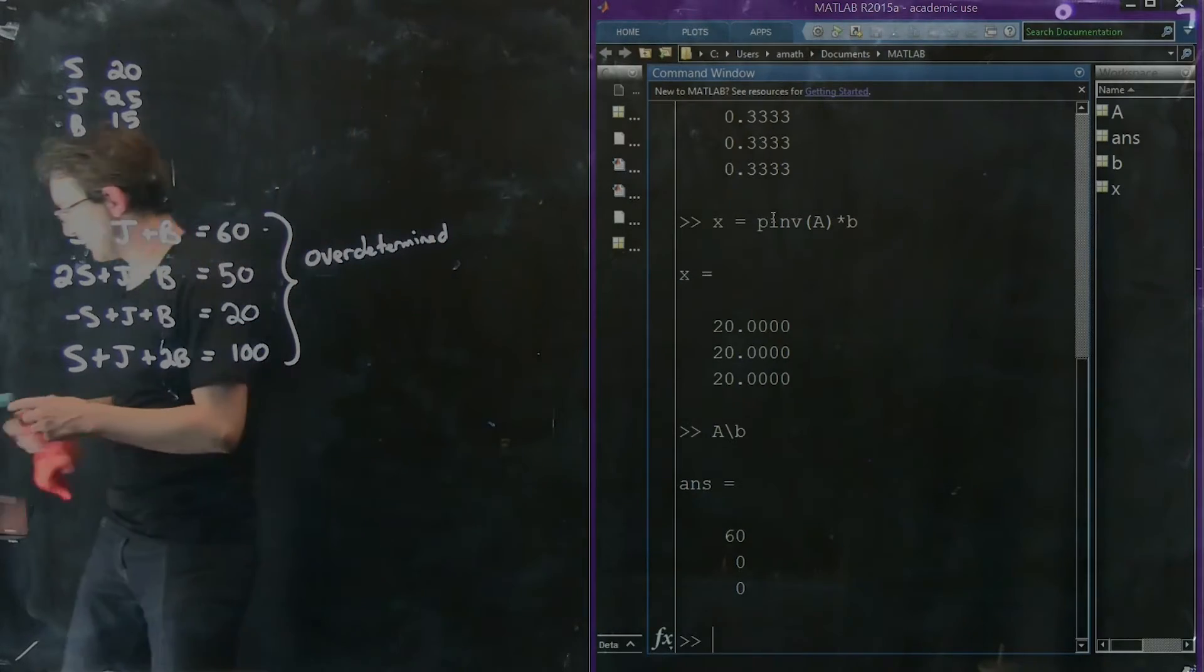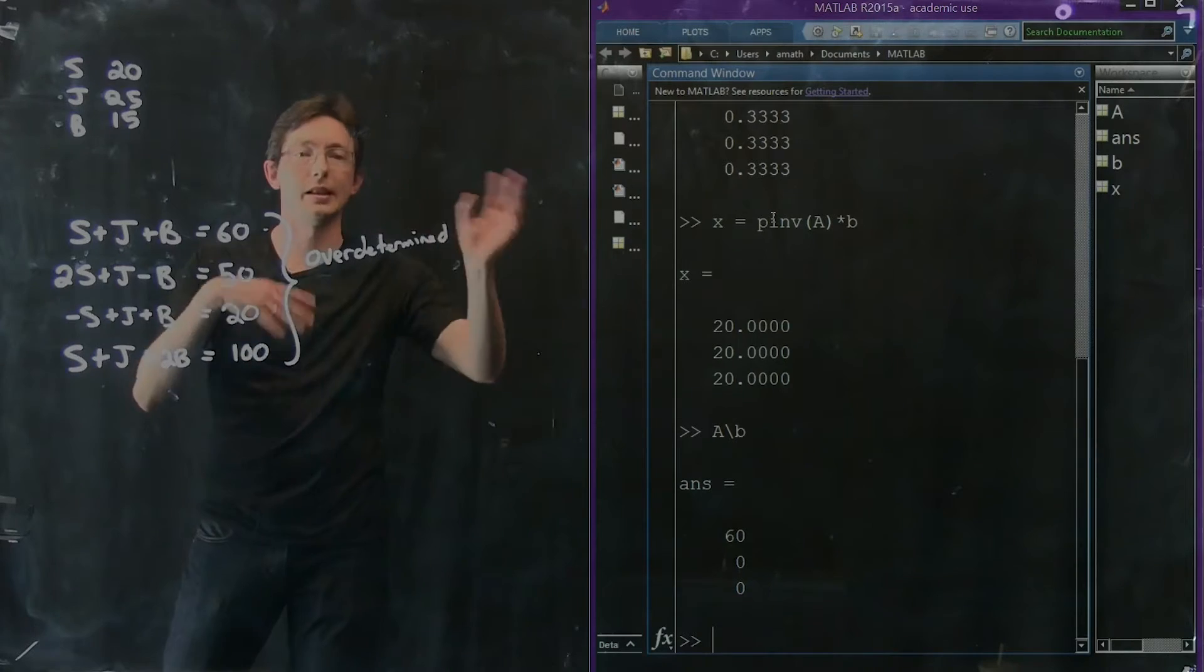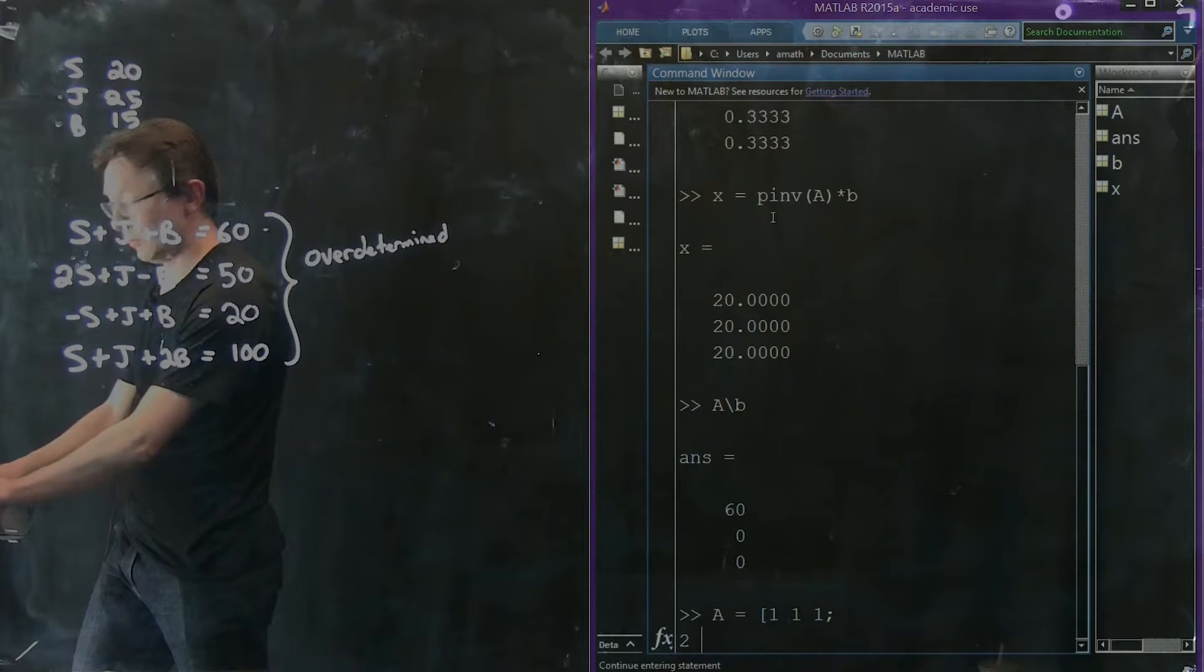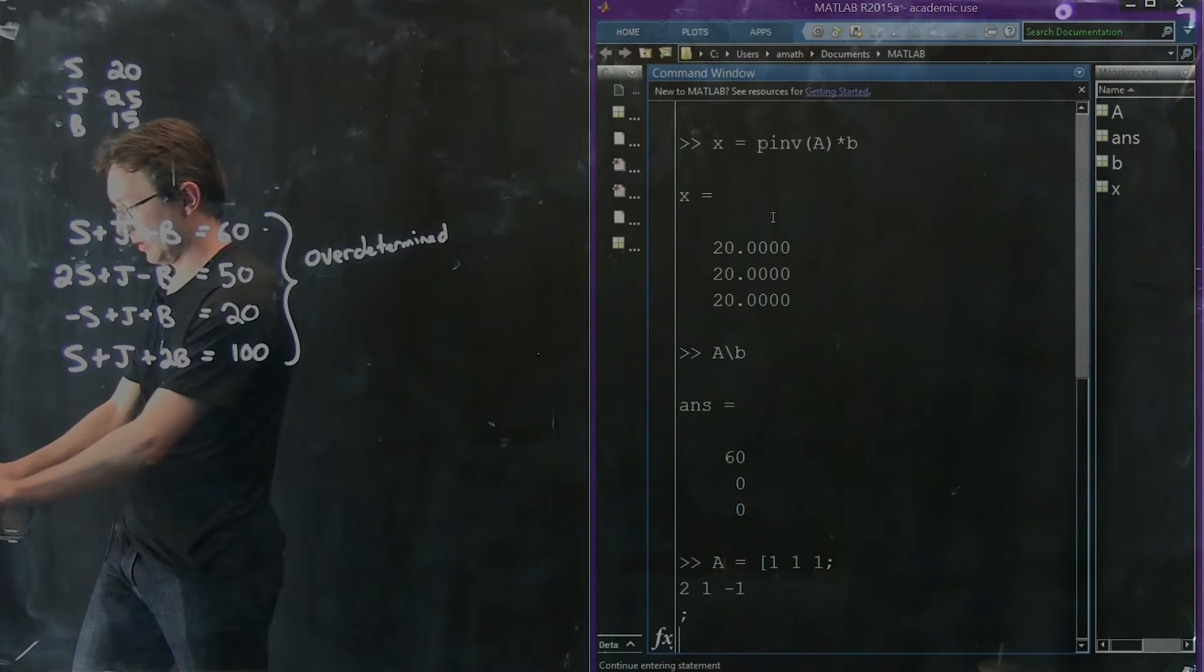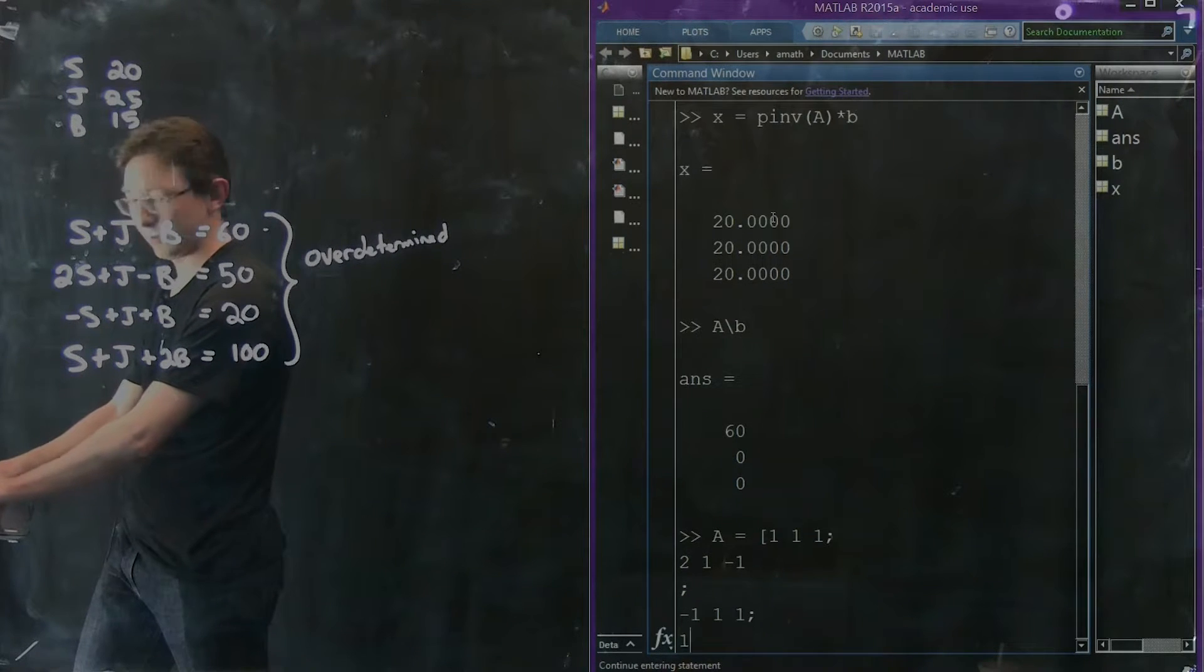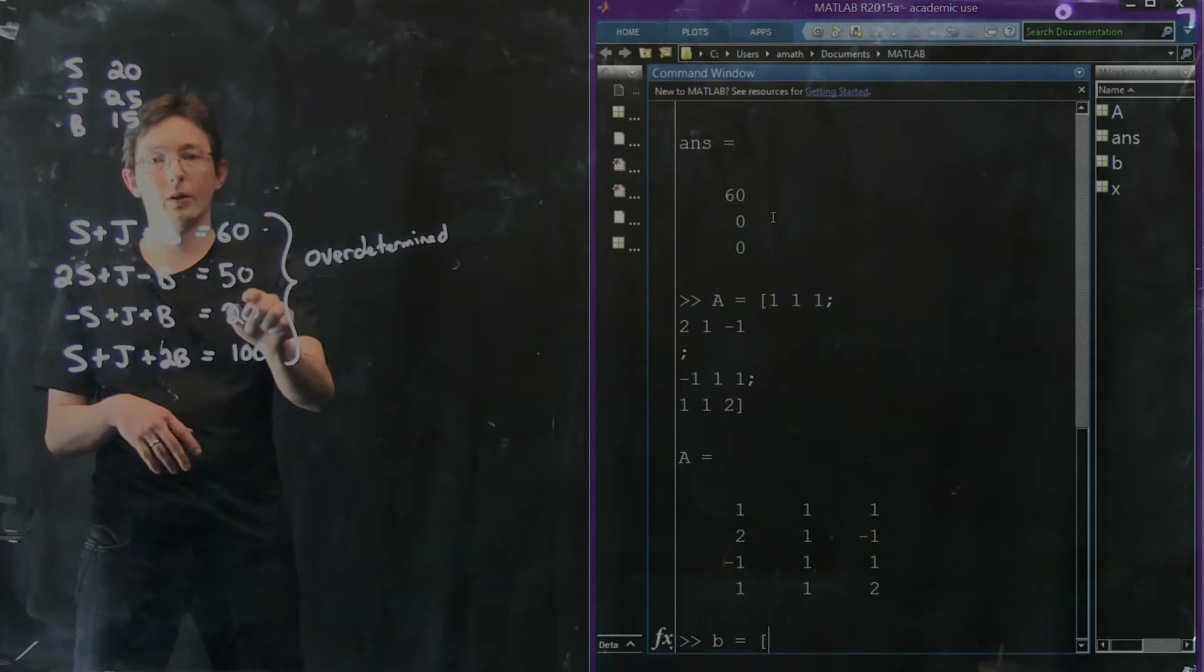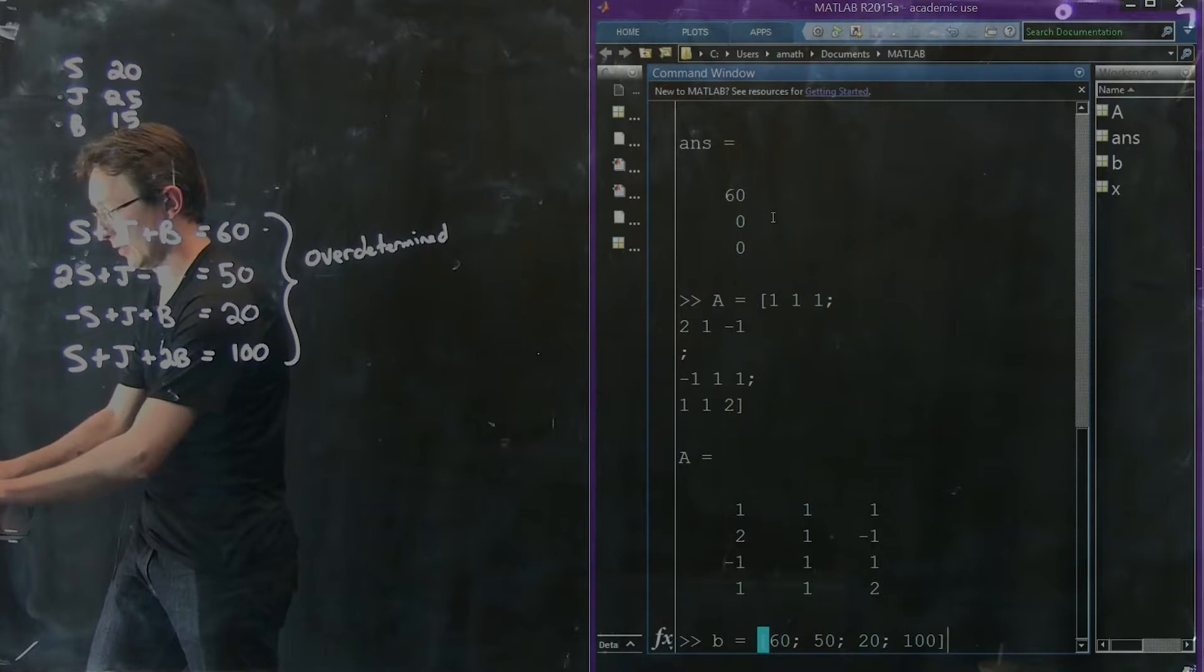And we can do the same thing as before. We can look at this matrix and the inverse and the pseudo-inverse, and we can just say, well, A equals 1, 1, 1, 2, 1, minus 1. That should be a semicolon. Negative 1, 1, 1, 1, semicolon 1, 1, 2. Let's make sure that works. Good. And my B vector is 60, 50, 20, 100. 60, 50, 20, 100.